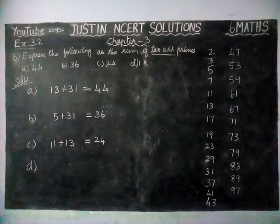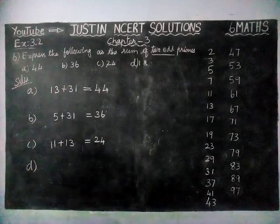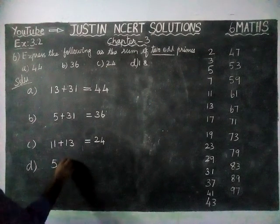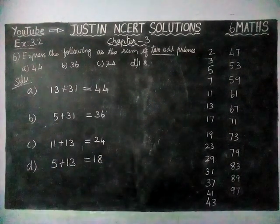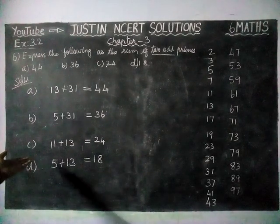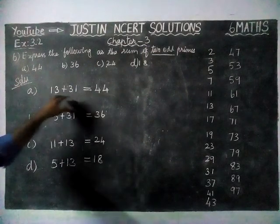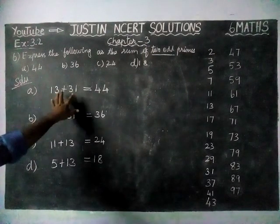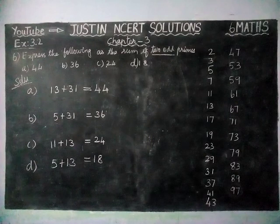Option D: we need 18. 5 plus 13 is equal to 18. You can find any pairs using these numbers — these are not the only answers. There may be other answers as well; you can find them using the given prime numbers.